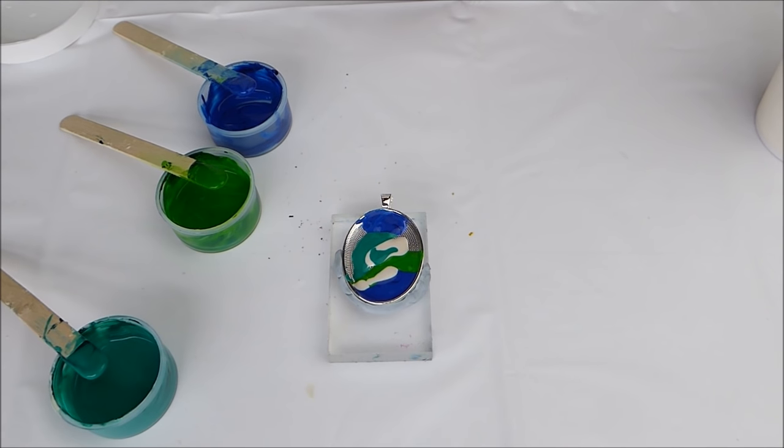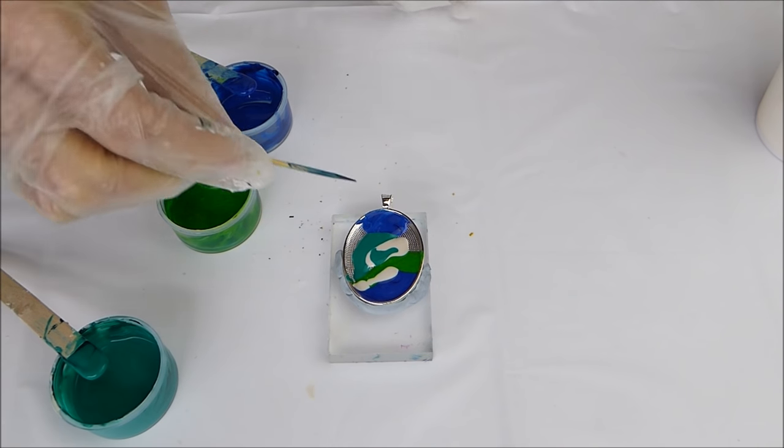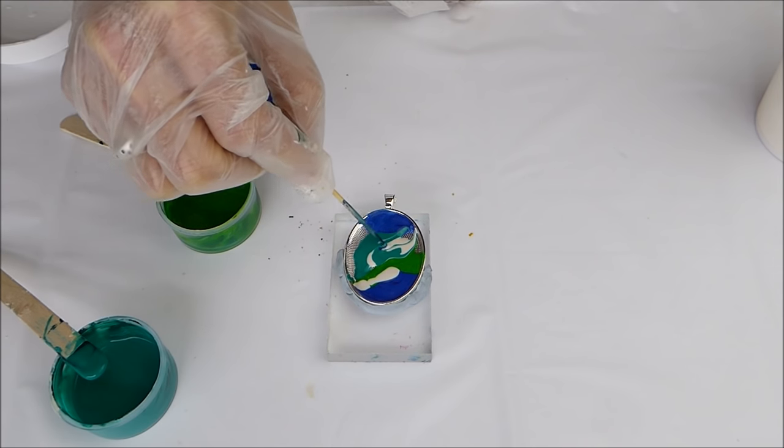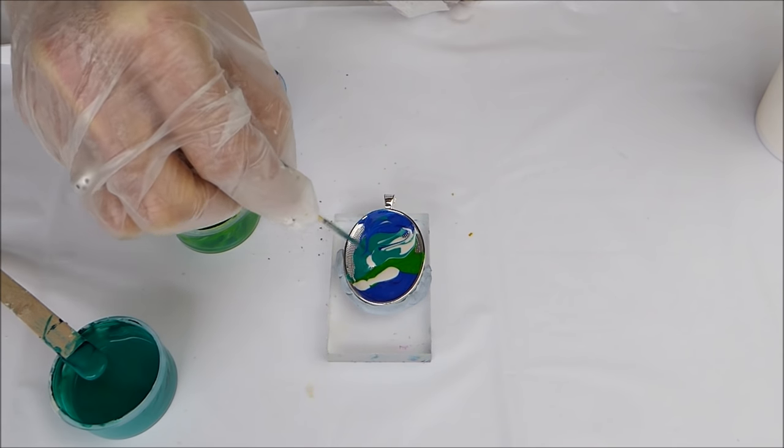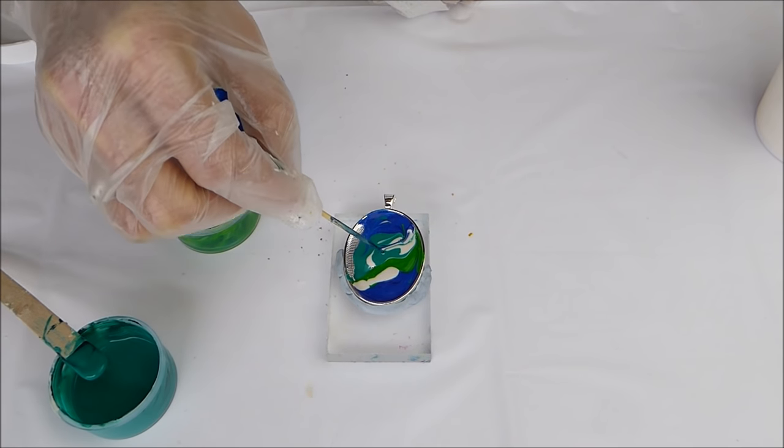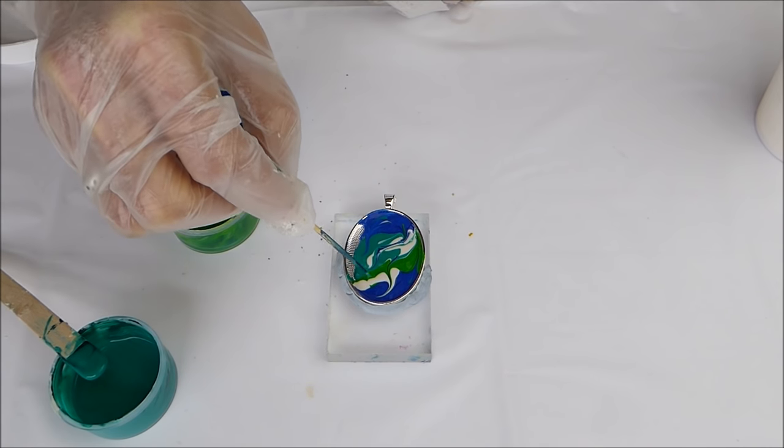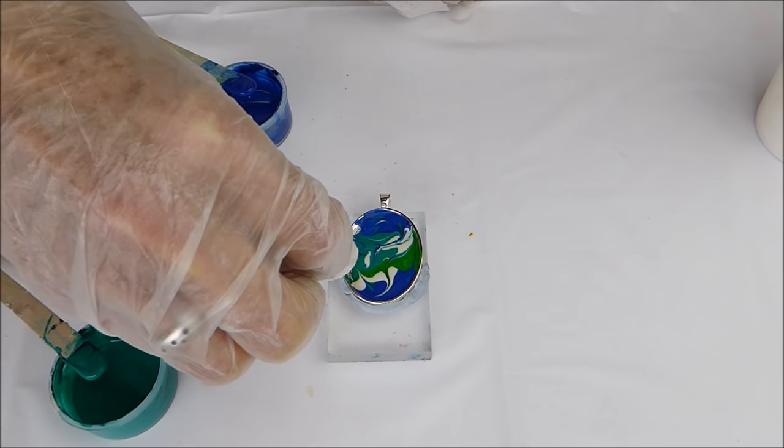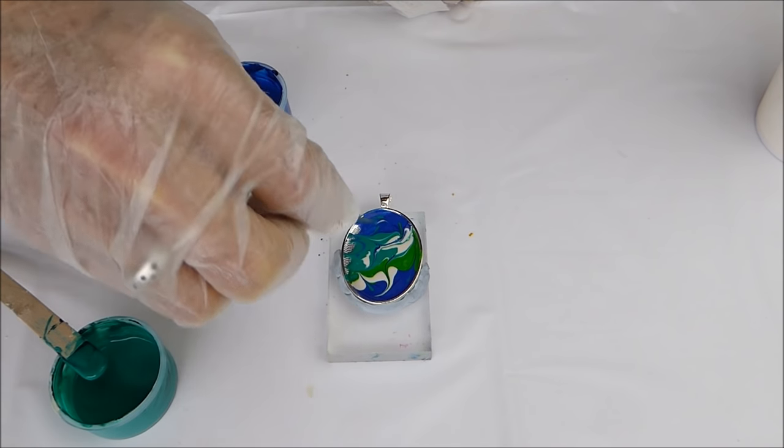And now I'm going to take a cocktail stick, a toothpick, and I'm going to drag it through the mix on my pendant and see what happens. And because this jesmonite is quite a thick liquid, you've got a lot of control over what happens. They won't bleed in and flow together, unlike, say, a watercolour painting.